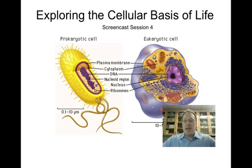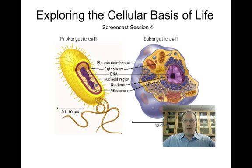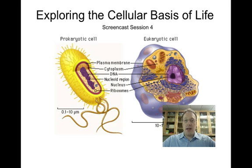Screencast session four. This diagram here shows the two main forms of cells we are going to be discussing in this unit. On the left is prokaryotic cells, and on the right, eukaryotic cell. You have seen screencast session three, wherein Mr. Gales delineated the differences and similarities between prokaryotic and eukaryotic cells, and you should have your Venn diagram on page 47 filled in with how they contrast and compare — that is, how they are different and how they are the same.